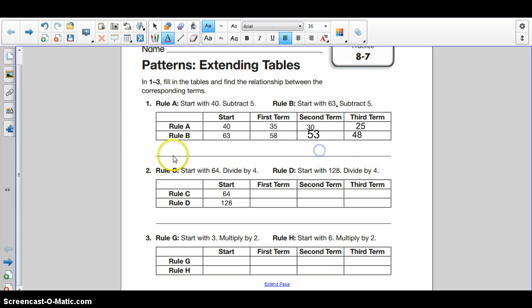Now we have to think about what the relationship is between these numbers, these sets of numbers. And just by looking, let's see: 63, 40, 35, 58, 30, 53, 25, 48.